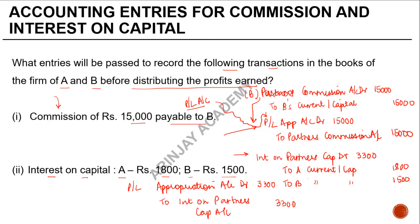In both these cases, the interest on partner's capital has been debited and credited by the same amount, so it is effectively nullified. You have the P&L appropriation account debited to partner's current or capital account as the case may be. Similarly, the commission account is knocked off, and you have P&L appropriation debited and partner's current or capital account credited by the respective amount.